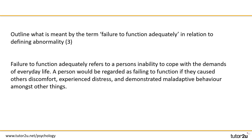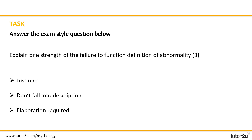Let's try that again. This time the question is: explain one strength of the failure to function definition of abnormality, worth three marks. A couple of tips before you start — it only asks you for one strength, so only do one. Any more than one would be detrimental to your time management. Don't fall into description — remember this is about evaluation. Elaboration is required, so for three marks we're looking for you to identify a point and then offer some elaboration around it. Pause your video for five minutes while you write your answer down.